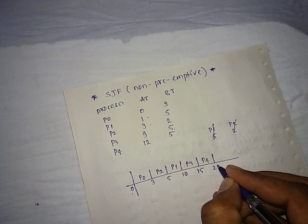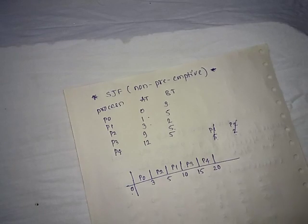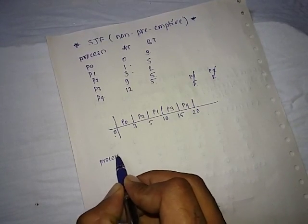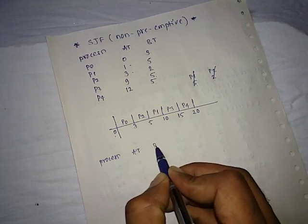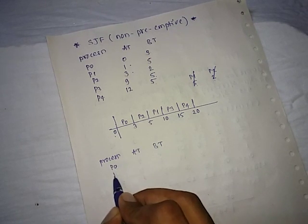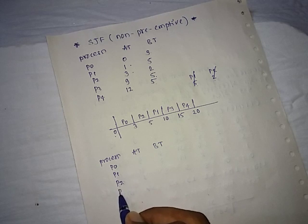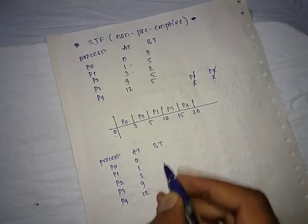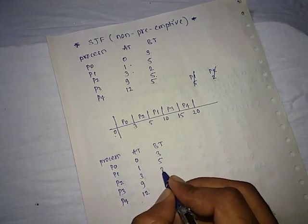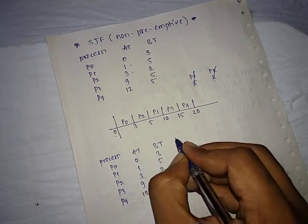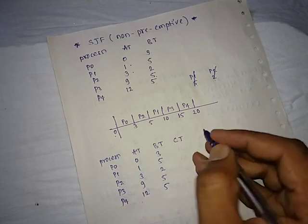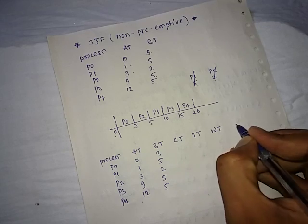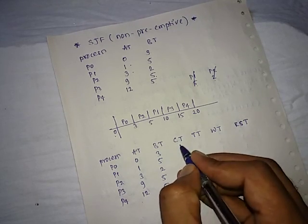Now create a table. That is process, arrival time, burst time - it is given in your question. Arrival times are 0, 1, 3, 9, and 12. Burst times are 3, 5, 2, 5, and 5. Next columns are completion time, turn around time, waiting time, and response time.